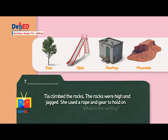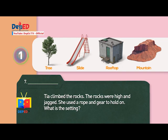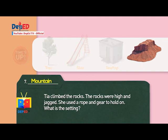Number seven: Tia climbed the rocks. The rocks were high and jagged. She used a rope and gear to hold on. What is the setting? Clues: A tree. A slide. A rooftop. A mountain. Answer: A mountain.